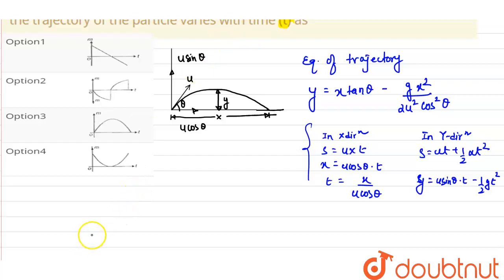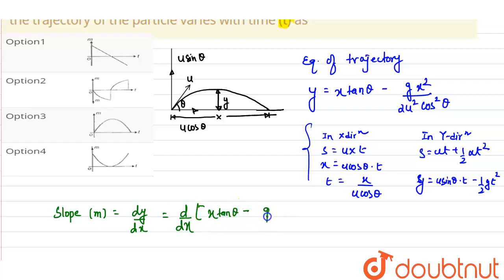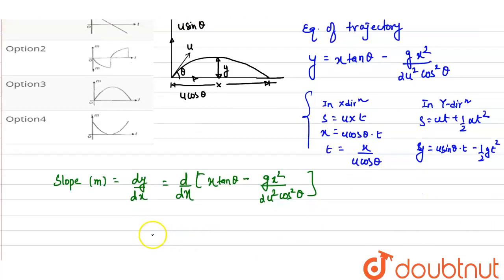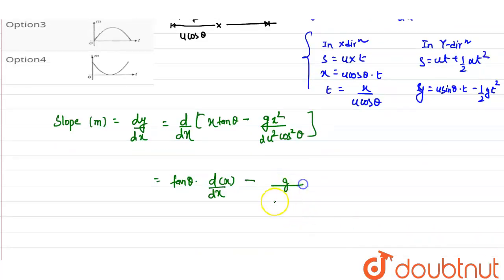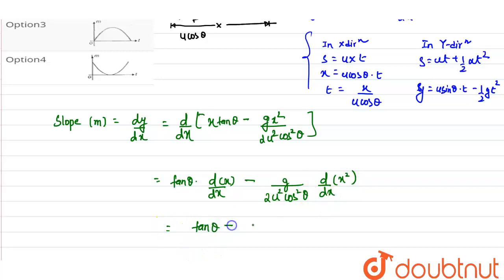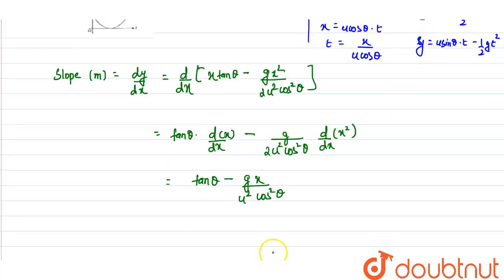Now, the slope m is dy/dx. So differentiate the equation of trajectory: y = x·tanθ − gx²/(2u²cos²θ). On differentiating, we get: dy/dx = tanθ − gx/(u²cos²θ).